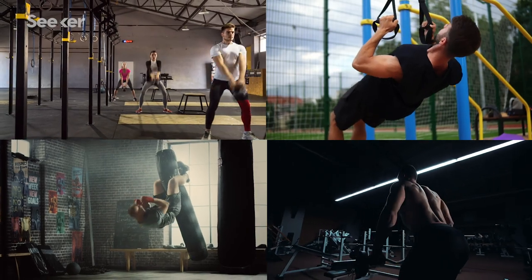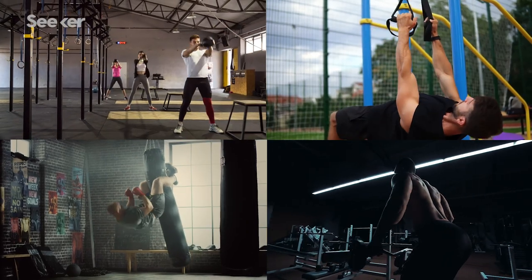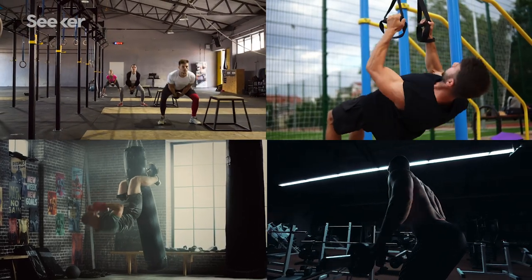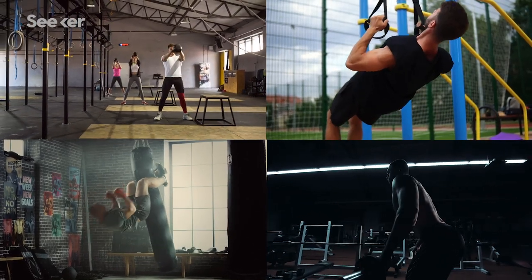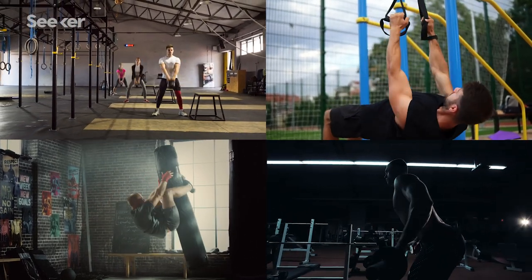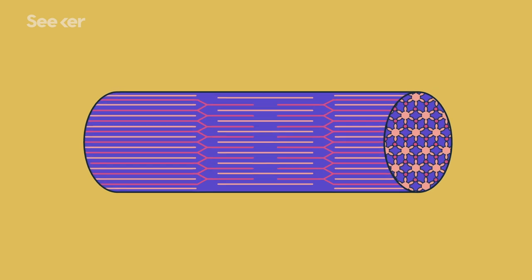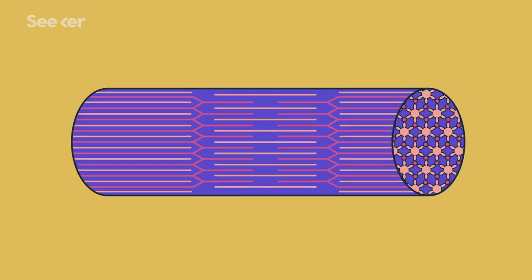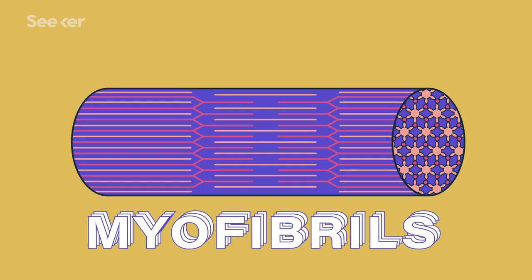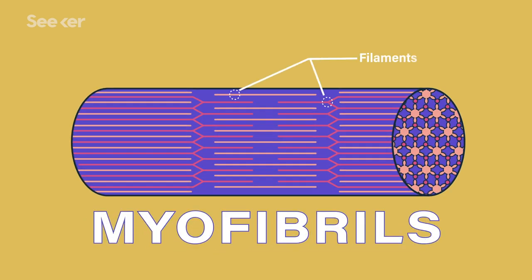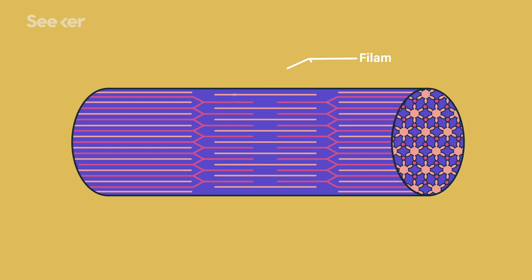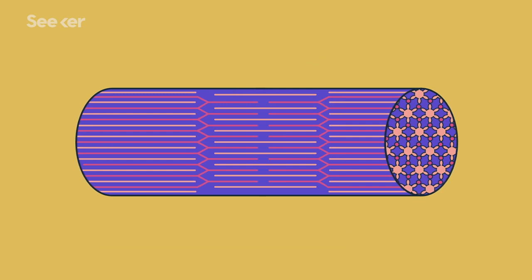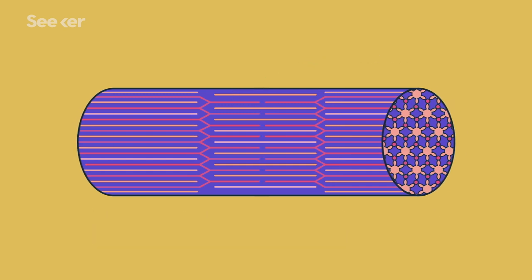That might also mean shrinking, or undergoing atrophy, if the muscle isn't being used heavily. To understand how a muscle grows, we need some basic skeletal muscle anatomy. Within each muscle cell are strands of stiff proteins called myofibrils, which contain long proteins called filaments arranged into a parallel pattern that lets them slide back and forth past each other.